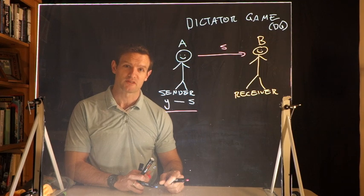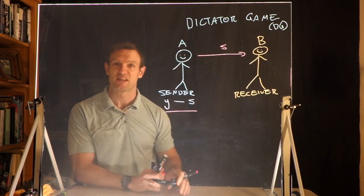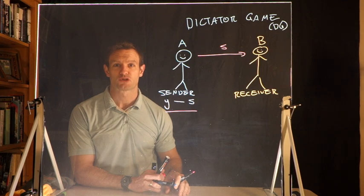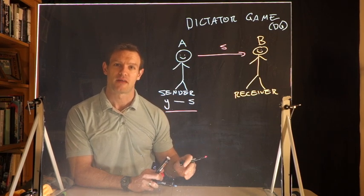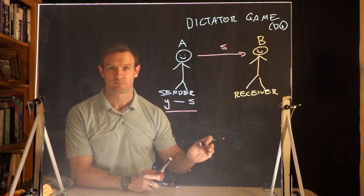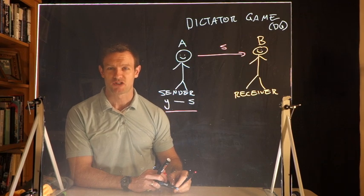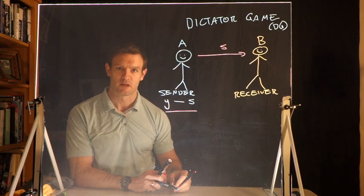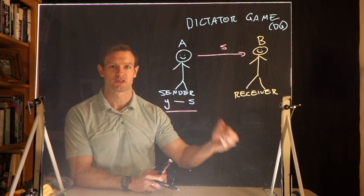Alternatively, sometimes B is not a person but a charity, in which case we're trying to understand charitable giving to a cause rather than giving to another person. In both situations, the dictator game is trying to measure some idea of altruism, what A is willing to incur as a cost in order to give to person B.